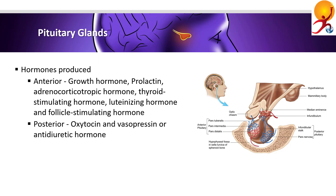Gonads are where eggs and sperm are produced. LH is also a gonadotropic hormone — it acts upon the ovaries of women to stimulate ovulation and the formation of the corpus luteum, which secretes estrogen. In men, LH acts on the testicles to stimulate the production of testosterone.